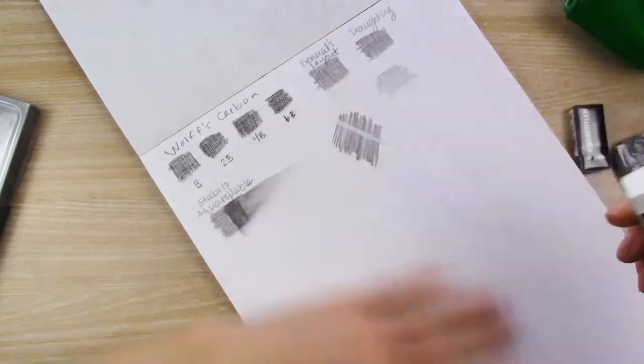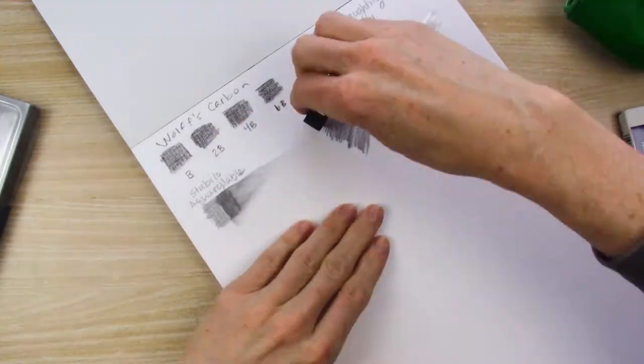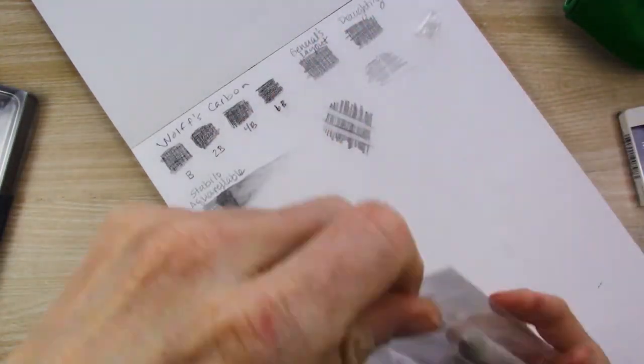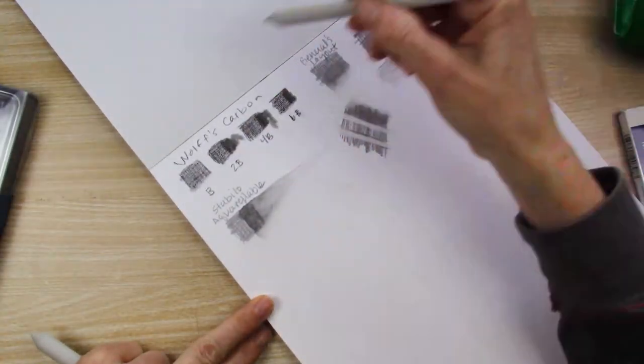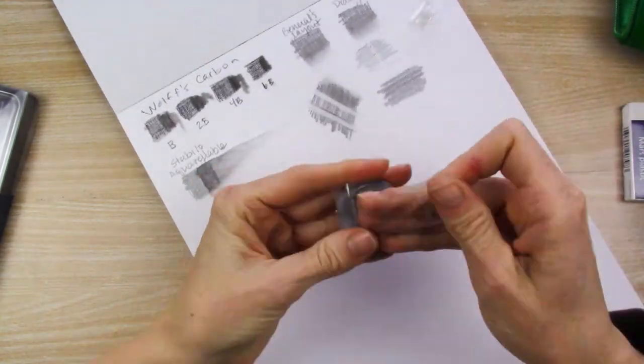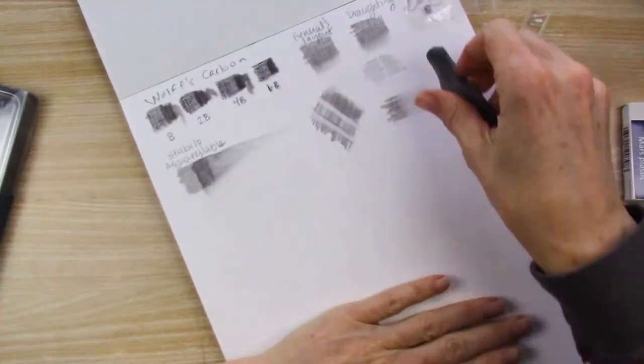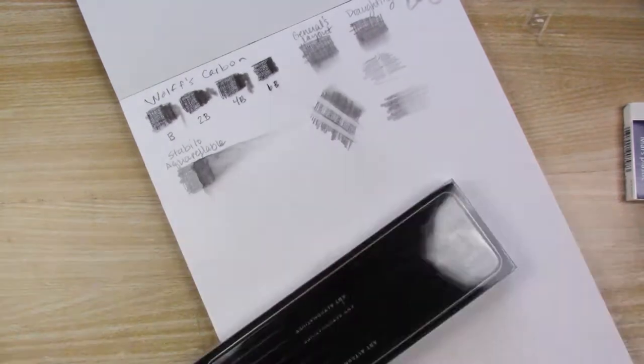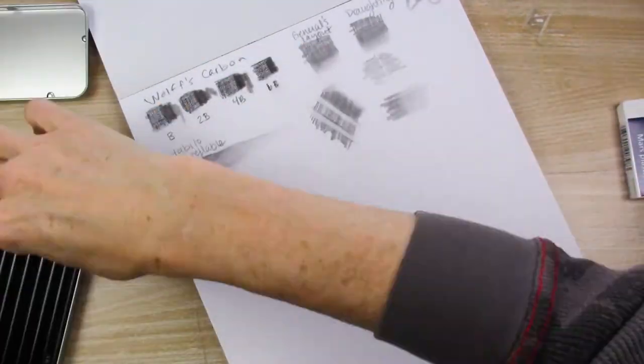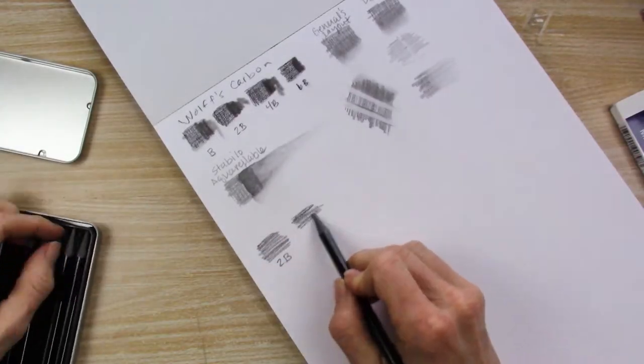That aquarellable pencil was fun. It did dissolve in water, but the paper did not handle the water well at all. So I'll probably avoid that with this paper. And then the blending stubs work just like they're supposed to. So nothing special there. Just try them all out, all these supplies, see how they go.